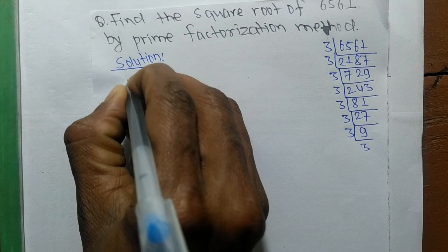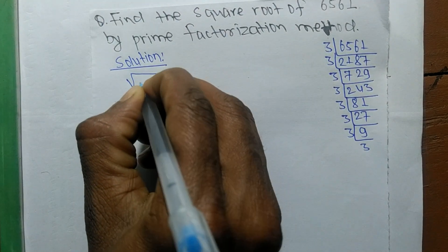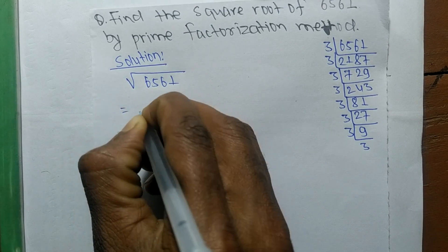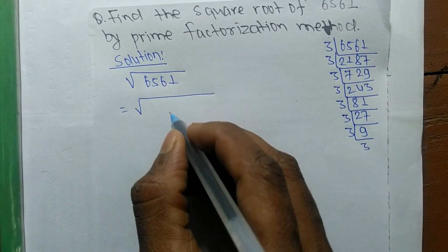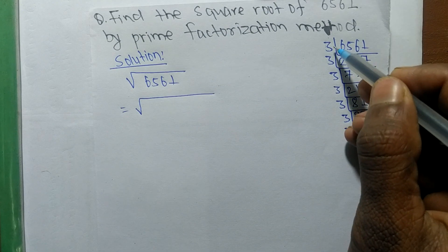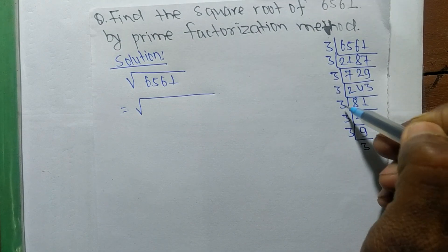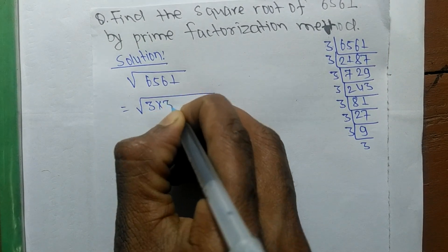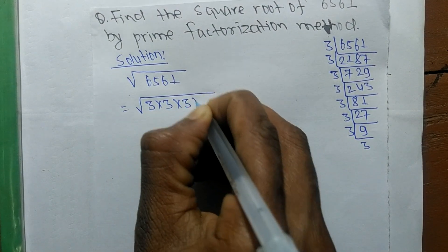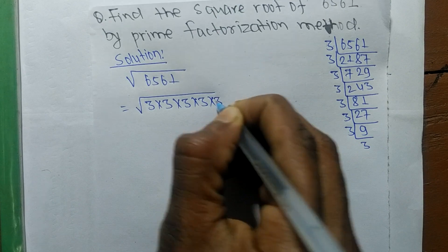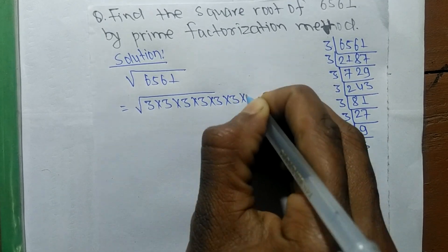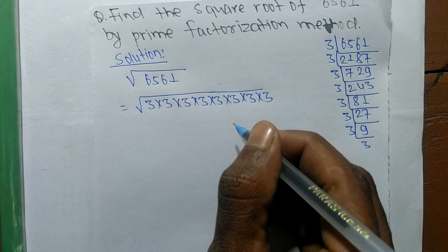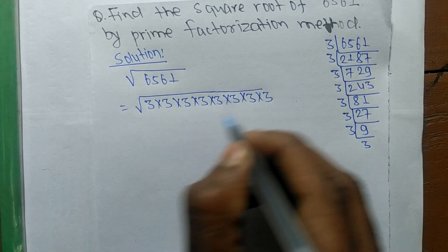Now we are finding the square root of 6561. We write all the prime factors in multiplication form — it is 3 appearing 8 times, so it is 8 times 3.